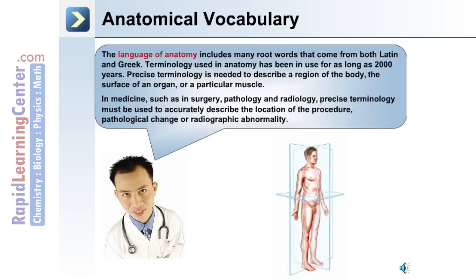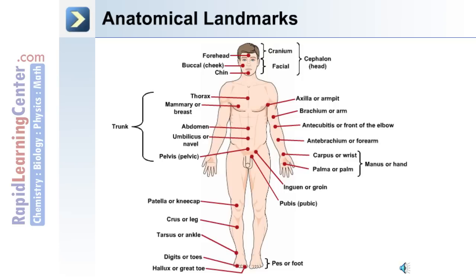Precise terminology is needed to describe a region of the body, the surface of an organ, or a particular muscle. In medicine — such as surgery, pathology, and radiology — precise terminology must be used to accurately describe the location of a procedure, a change of pathology, or a radiographic abnormality.